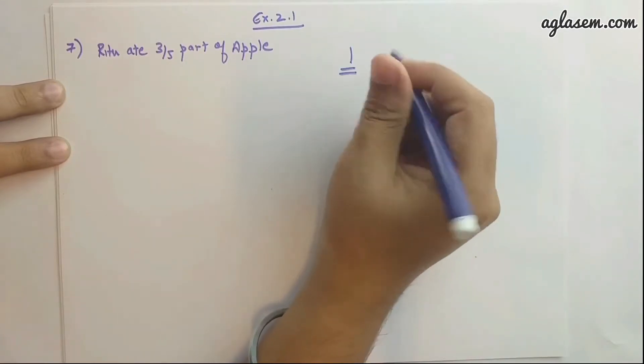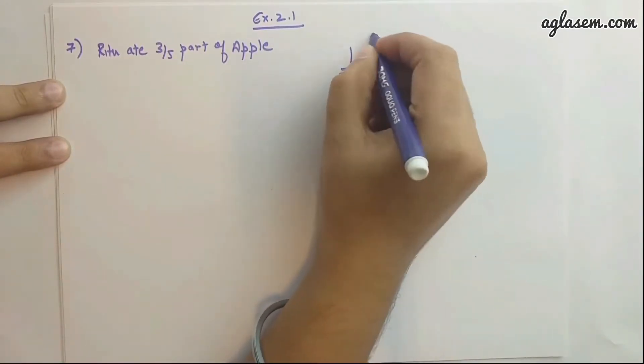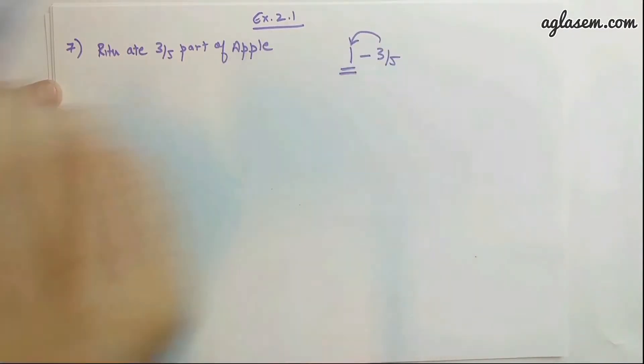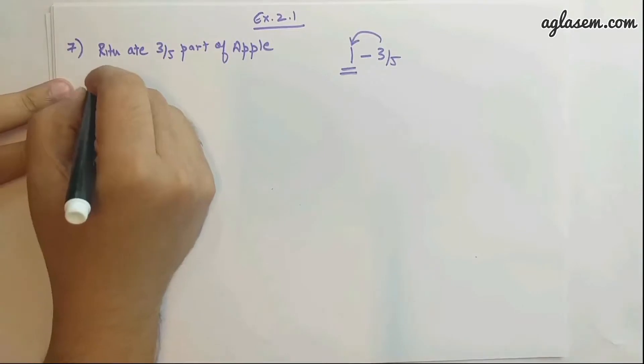I ate 3/5 part of this apple, and now I ask you what will be left for you. Same is the situation with Ritu and Somu. Ritu has already eaten 3/5 of the apple, and now we're asking how much apple did her brother Somu eat. So Somu will get 1 minus 3/5 of this apple.